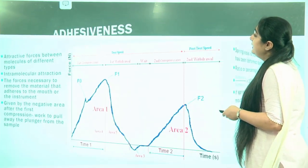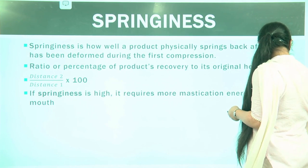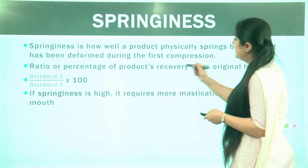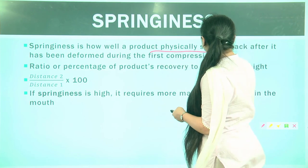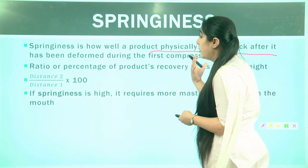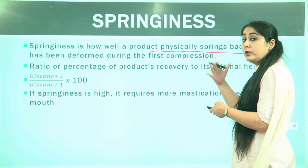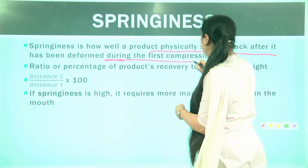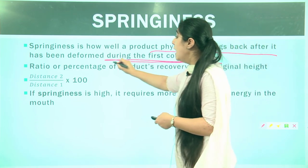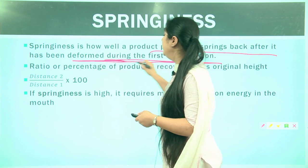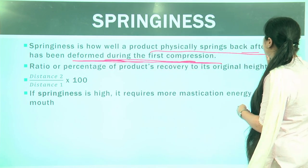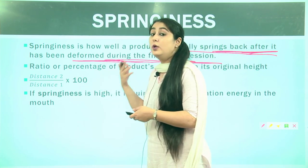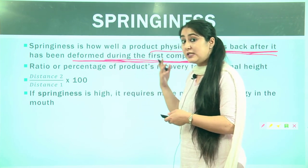Springiness refers to how physically a product springs back to its original dimension after being deformed by the first compression. It measures how much the food bounces back to its original height after the compression is removed.